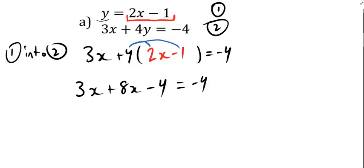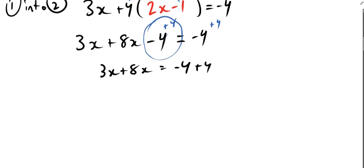Four times two x is eight x and four times negative one is minus four. A lot of people would forget to multiply by both and they'd get like eight x minus one. Then this is very familiar. I'm going to take the negative four and add four. Three x plus eight x equals negative four plus four. Three x plus eight x is 11 x. Negative four plus four is zero. Divide by 11. X equals zero.